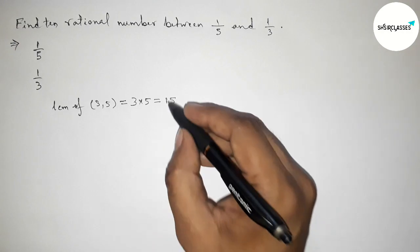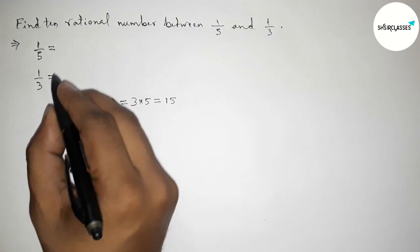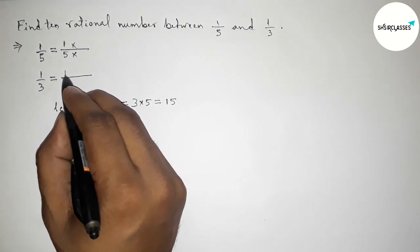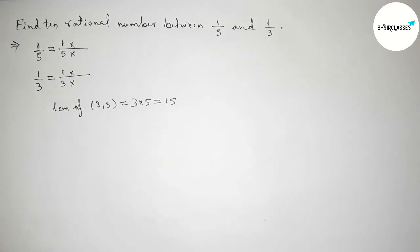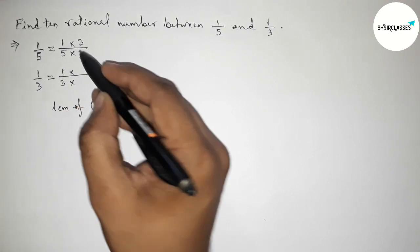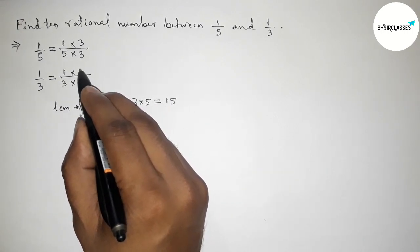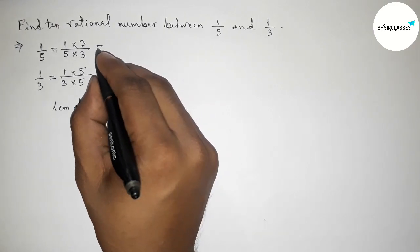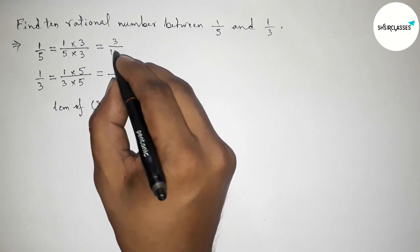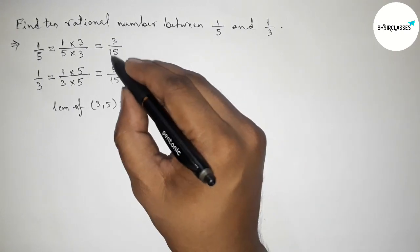So 15 is the LCM. Now making the denominator 15 for both fractions. For 1/5: multiplying top and bottom by 3 gives 3/15. For 1/3: multiplying top and bottom by 5 gives 5/15. So now both denominators are equal to 15.